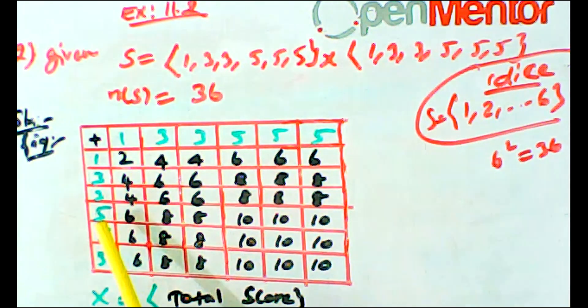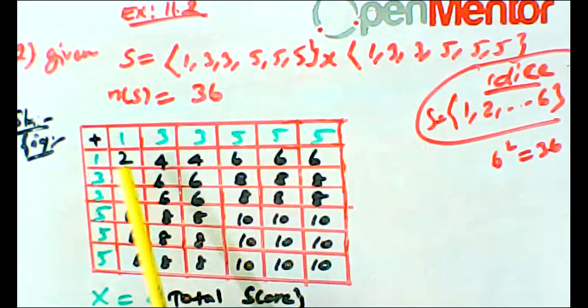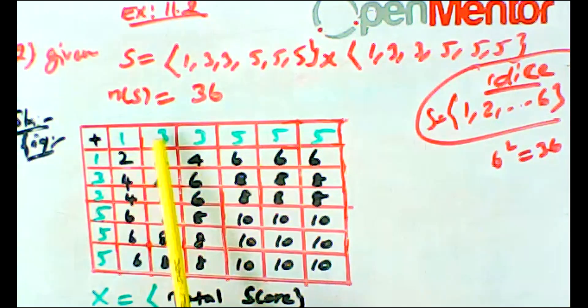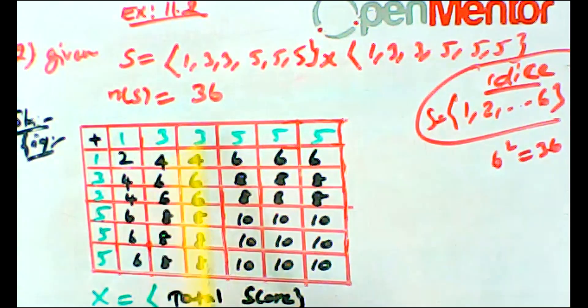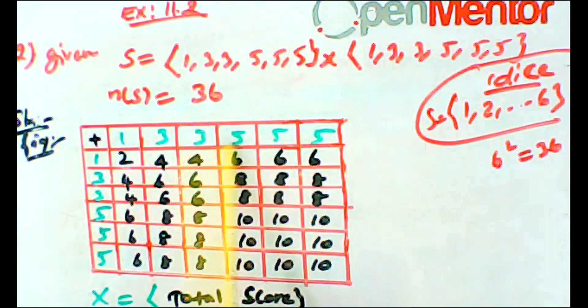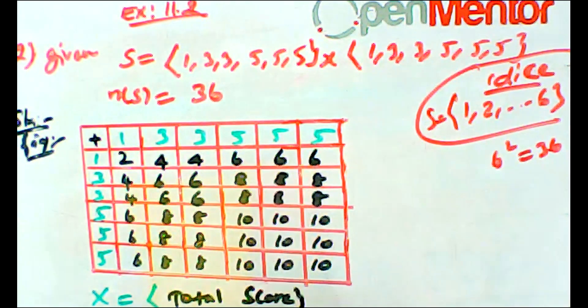Now let's list the outcomes. We can write: 3 plus 1 equals 4, 3 plus 1 equals 4, 5 plus 1 equals 6, 5 plus 1 equals 6, 5 plus 1 equals 6.